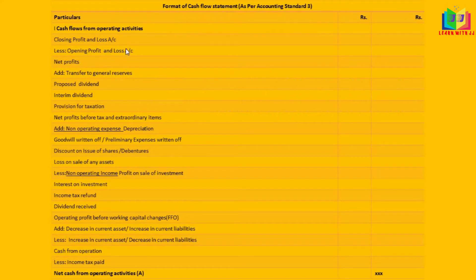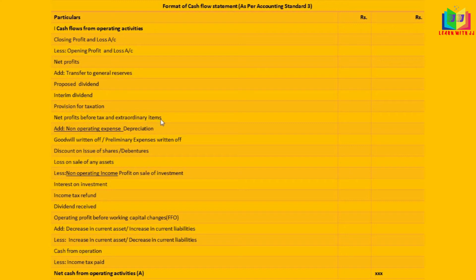Now we'll see the format of this cash flow statement as per Accounting Standard 3, using the indirect method. We start with the closing balance of the profit and loss account and subtract the opening balance of profit and loss to arrive at the net profit. To this we add any transfer to reserves, proposed dividend or interim dividend, and provision for income tax, to arrive at the net profit before tax and extraordinary items.